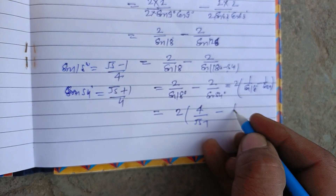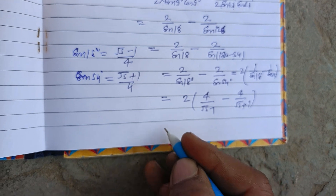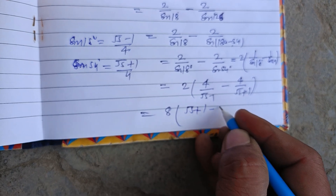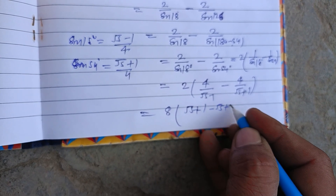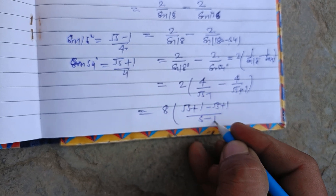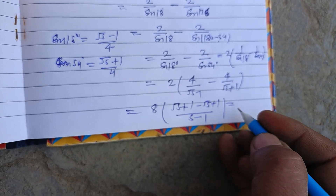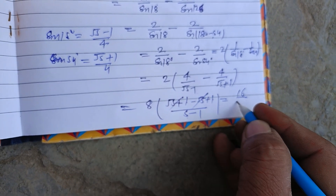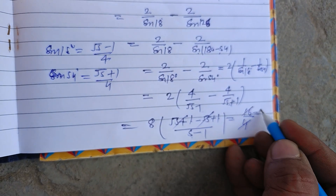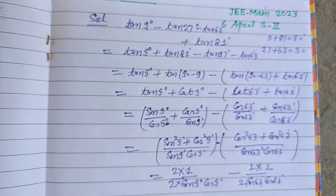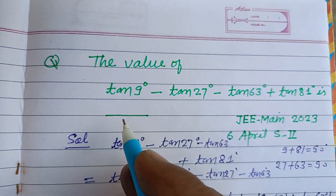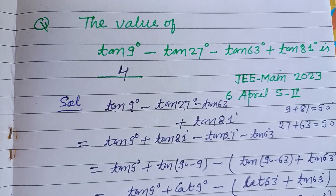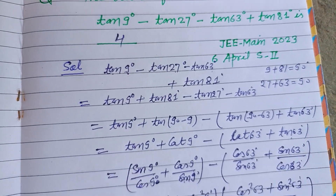Taking 4 as common, we get 8 times [(√5+1) minus (√5−1)] over (5−1), which simplifies to 8 times 2 over 4, giving 4. Therefore 4 is the correct answer to this question. It is an integer type question, so 4 is the final answer. I hope you got it — please like the video and subscribe to the channel.